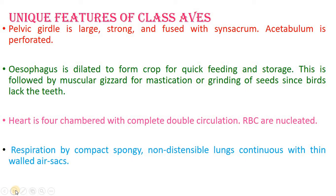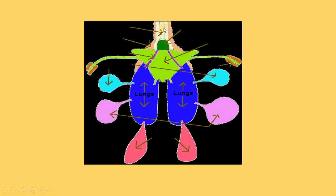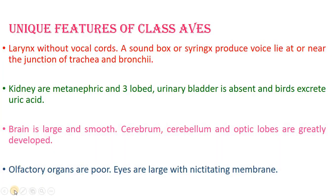Because of all these features, birds are said to be unique and special animals living on earth. We can observe the lungs, air sacs, trachea, and the voice box or syrinx. The larynx of birds lacks vocal cords, unlike in mammals. However, the syrinx or voice box is present to produce voice or sound, located at or near the junction of the trachea and bronchi — the syrinx is a unique feature of birds.